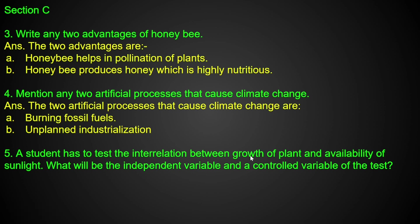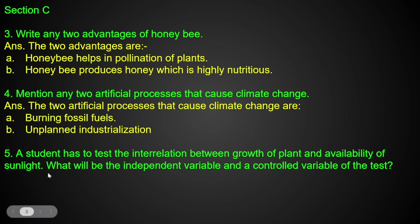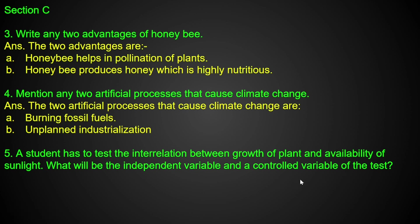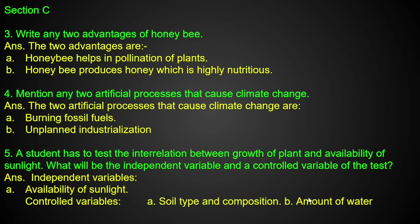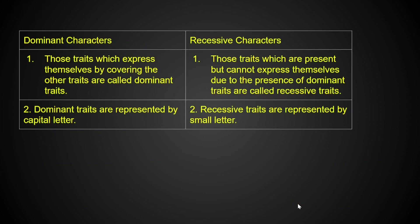A student tests the interrelationship between growth of a plant and sunlight. The dependent variable is growth of the plant. The independent variable is availability of sunlight. The control variables are soil type, composition, and amount of water.